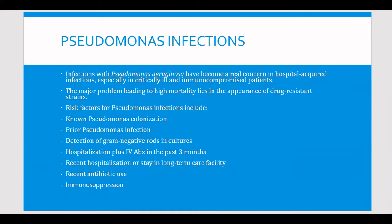Additional risk factors include detection of gram-negative rods in cultures, hospitalization plus IV antibiotics in the last three months, recent hospitalization or a stay in long-term care facilities — older patients in long-term care have higher risk than those living at home — recent antibiotic use, and of course immunosuppression. Knowing these risk factors helps you decide which antibiotics to use.